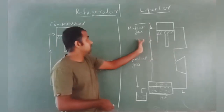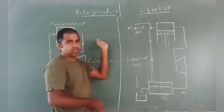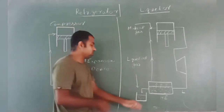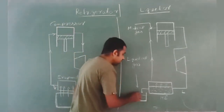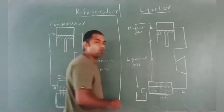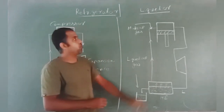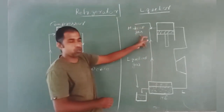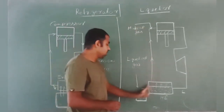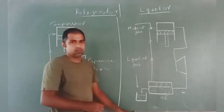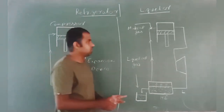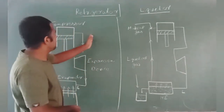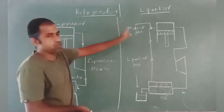In addition to the refrigerator operation, in the liquefier there is a provision for collection of liquefied gas, and also a provision for supply of makeup gas in order to compensate for the production of liquefied gas. This is the difference between a refrigerator and a liquefier.